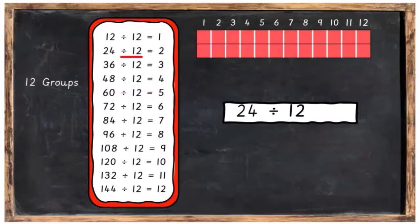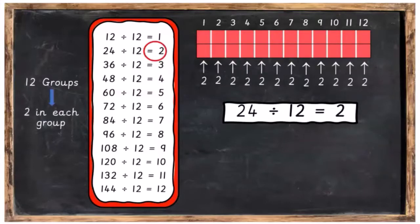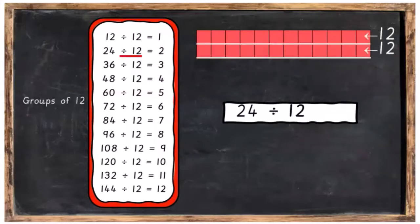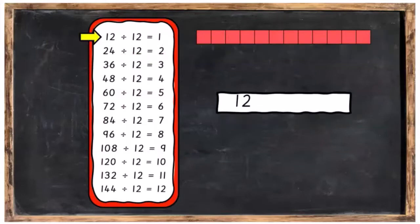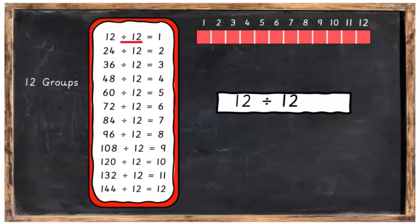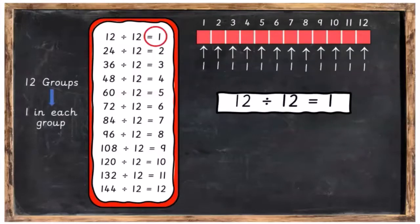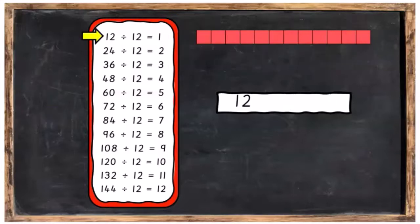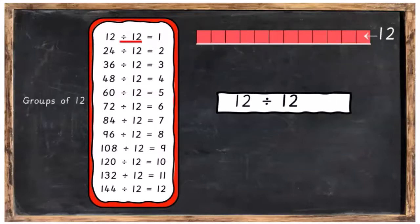24 — divide it into 12 groups and you're going to have 2 in each group. Or 24 divided into groups of 12, and you're going to have 2 groups of 12. And finally 12 — break it up into 12 different groups and you're going to have 1 in each group. Or take 12 and break it into a group of 12, and you're going to have 1 group of 12.